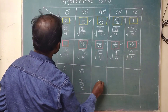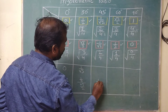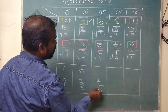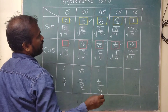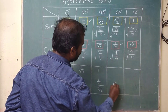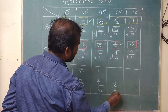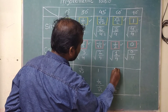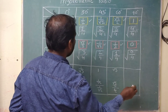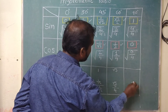For tan 45°: sin 45° / cos 45° = (1/√2) / (1/√2). Since they are the same value, they cancel and the answer is 1. For tan 60°: sin 60° / cos 60° = (√3/2) / (1/2). The 2s cancel and the answer is √3. For tan 90°: sin 90° / cos 90° = 1/0, which is infinity.